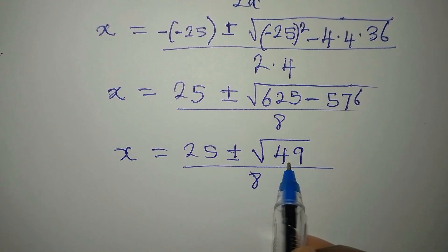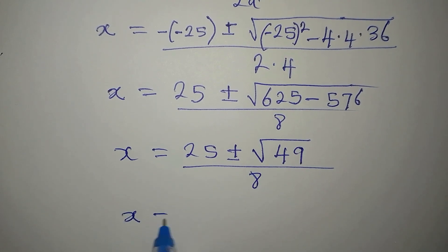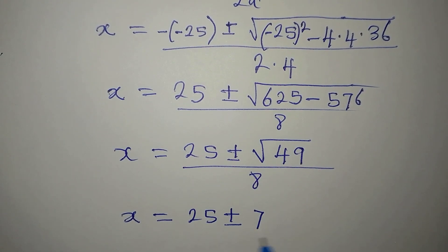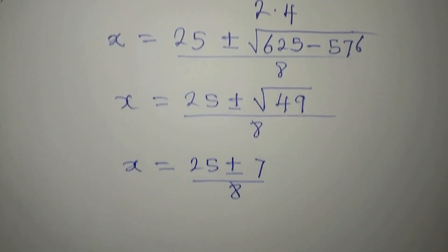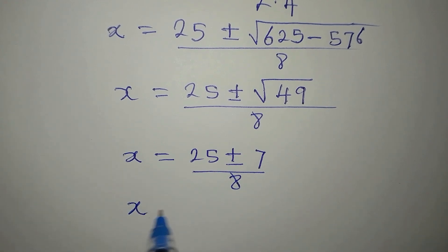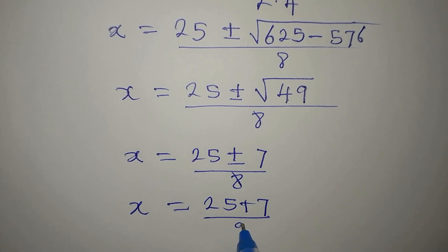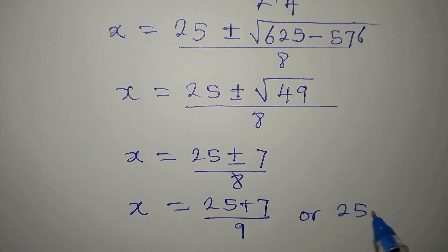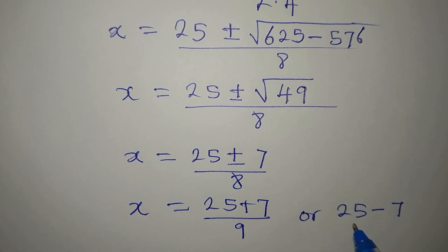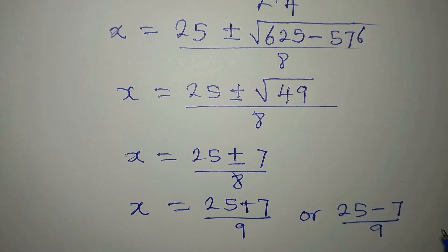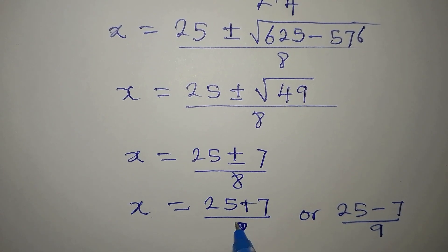But mind you, 49 is a perfect square. So it makes it easy for us. Our x will now be 25 plus or minus. We now have square root of 49 is 7. Then we divide by 8. So this means that our x is 25 plus 7 over 8 or 25 minus 7 over 8.